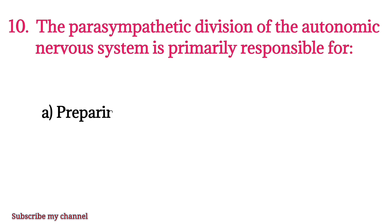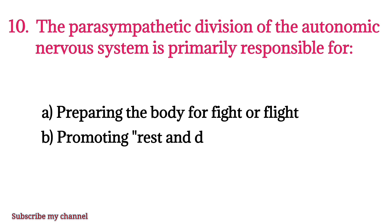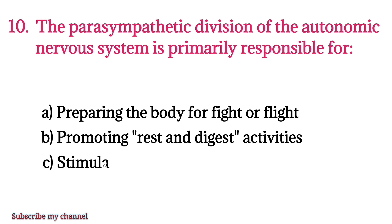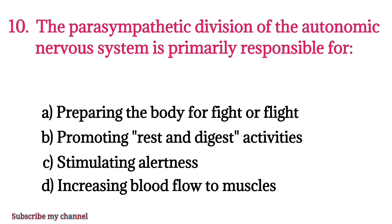MCQ number ten: What is the primary role of the parasympathetic nervous system? Option A: preparing the body for fight or flight, option B: promoting rest and digest activities, option C: stimulating alertness, option D: increasing blood flow to muscles. The right option is option B.